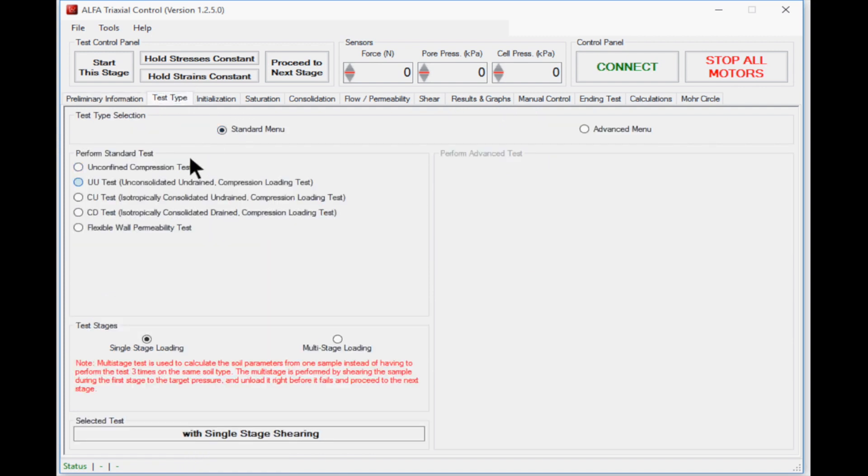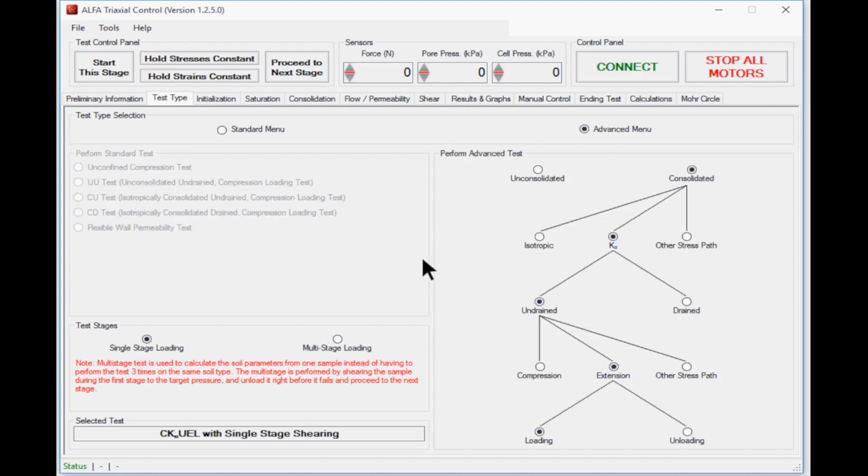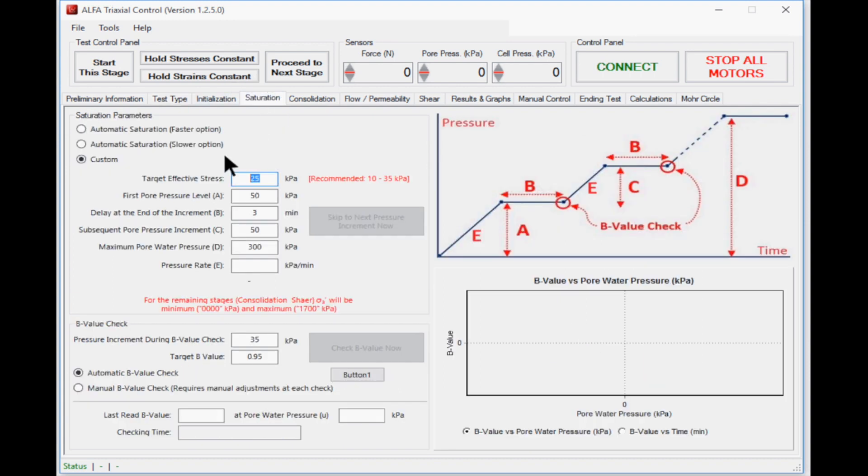Alpha's advanced triaxial software lets the user select any standard test type. Users can fill most of the test parameters with default values, or advanced users can customize the test according to their needs.